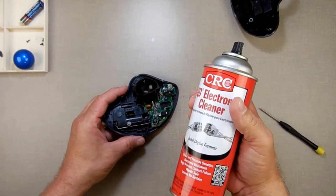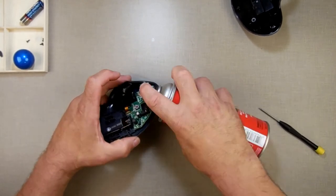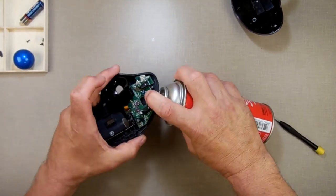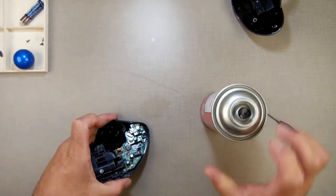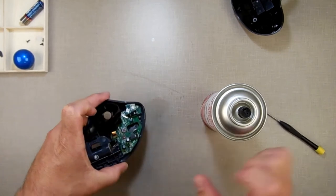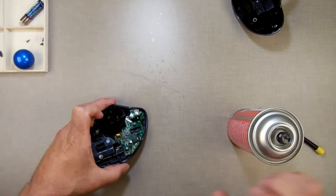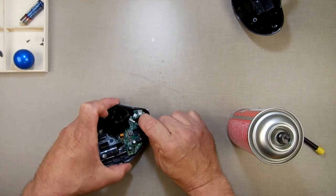And the cleaning is pretty easy. I just use contact cleaner or electronic cleaner. Just spray it in there really good like that. Move the button up and down. Spray it in there again really good. Don't be afraid to do it. Clean that thing out.